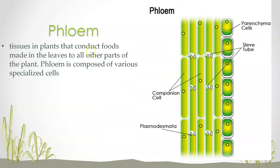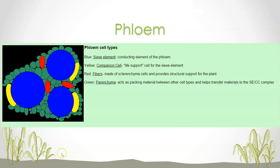Phloem conducts food: nutrients and photosynthetic products, which of course means glucose. Phloem has different elements: the sieve element is the conducting element that allows nutrients to move; companion cells are the life support providing ATP and other things; fibers are for protection; and parenchyma is a material between other cell types that helps transport materials. Those are the key elements of phloem.